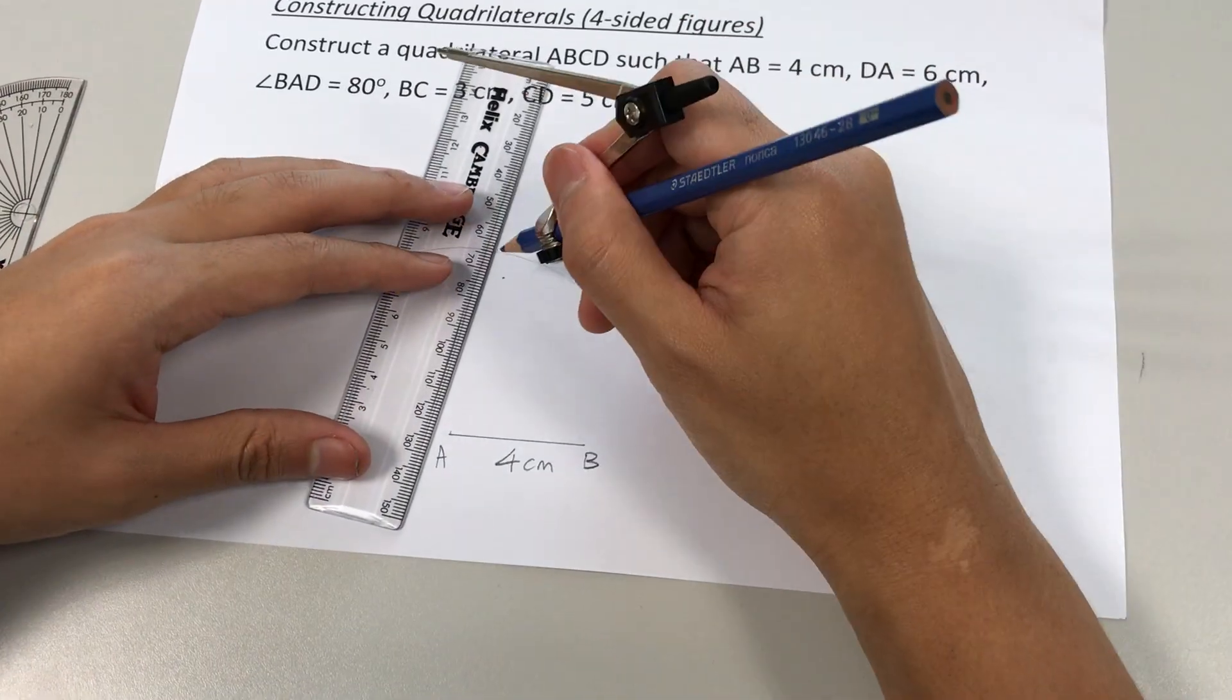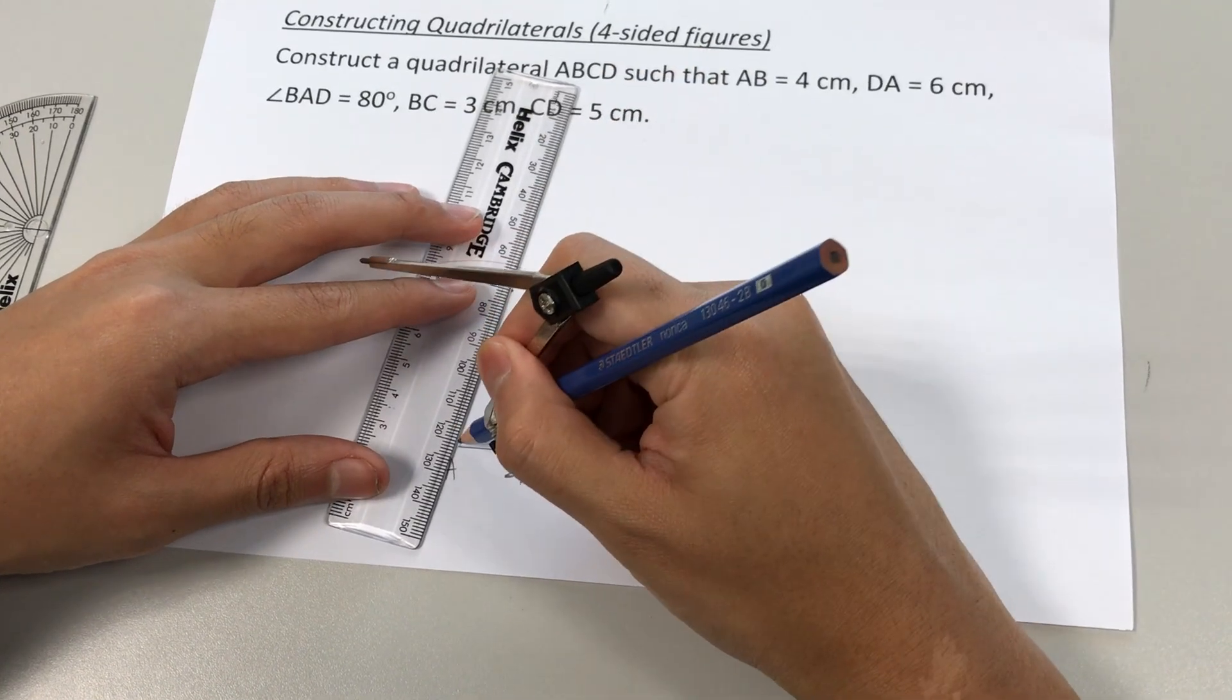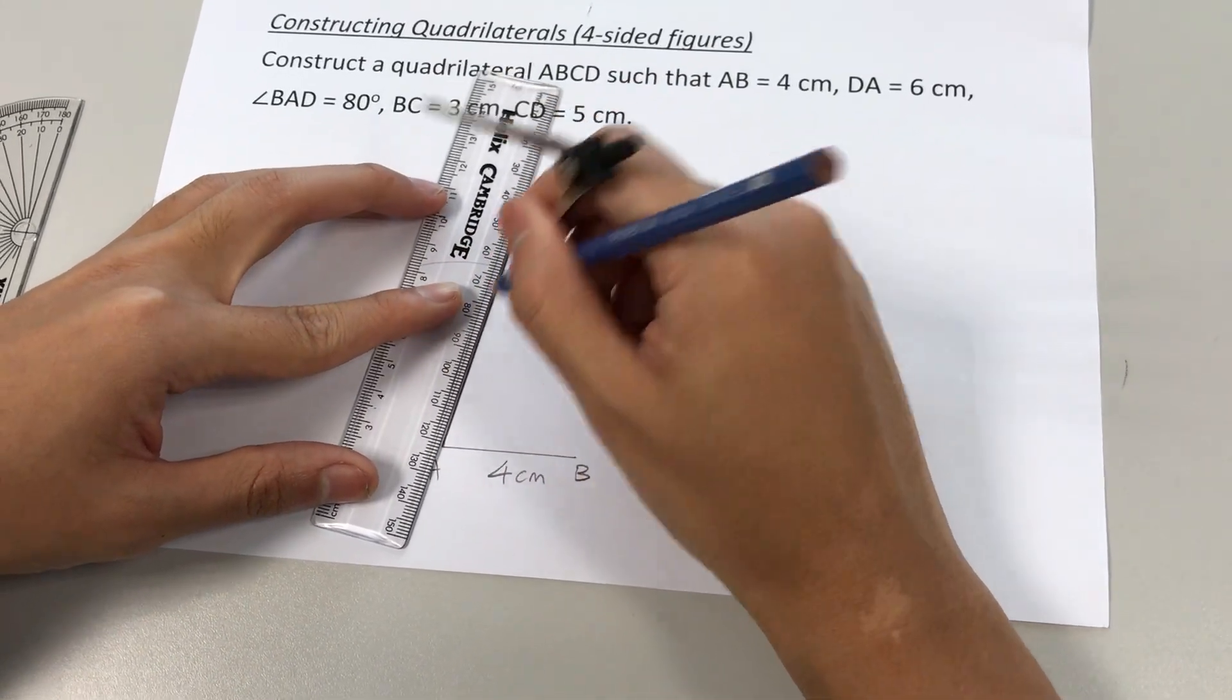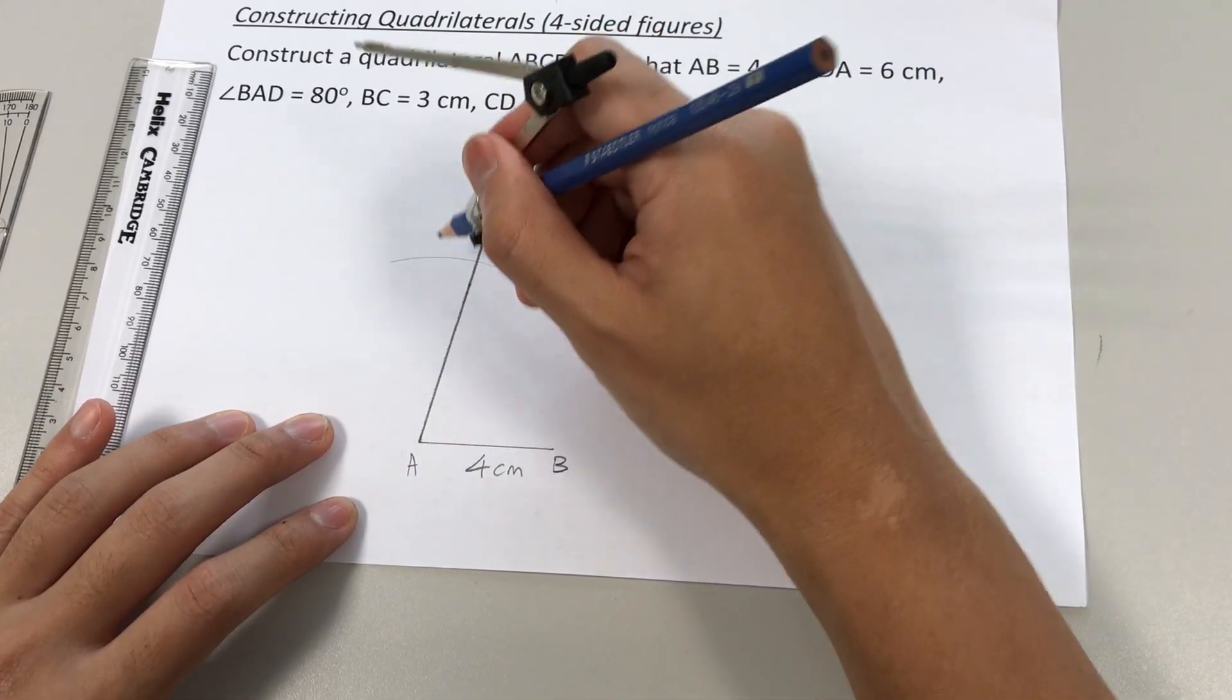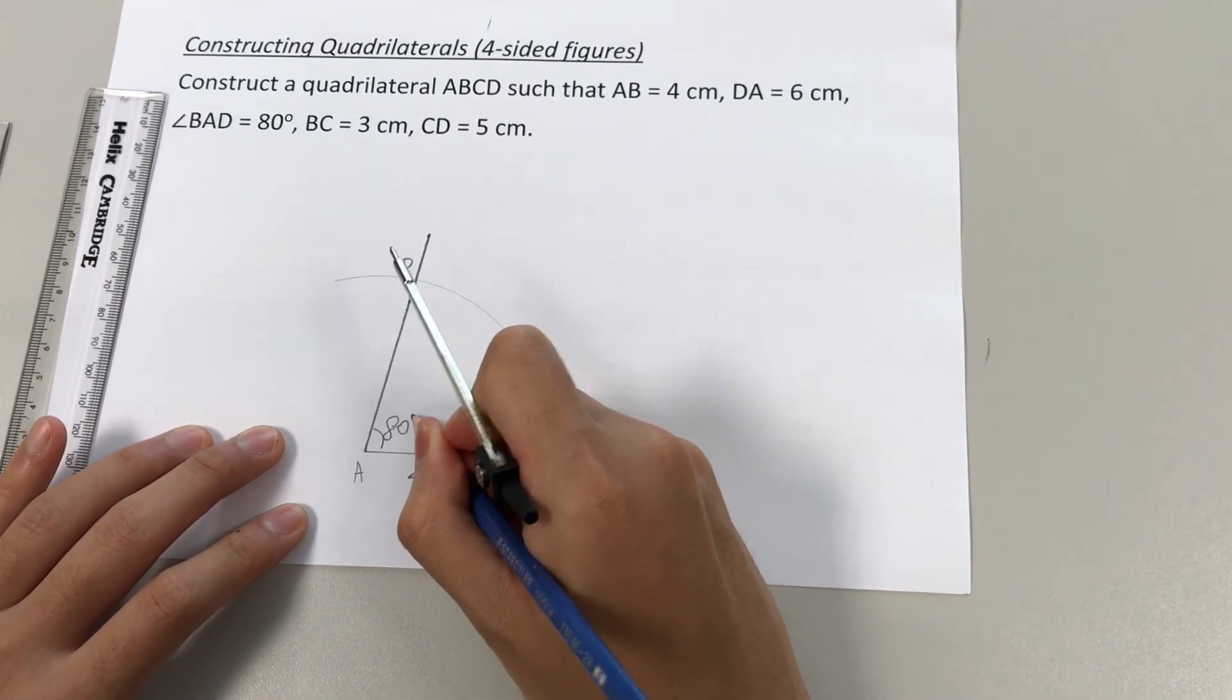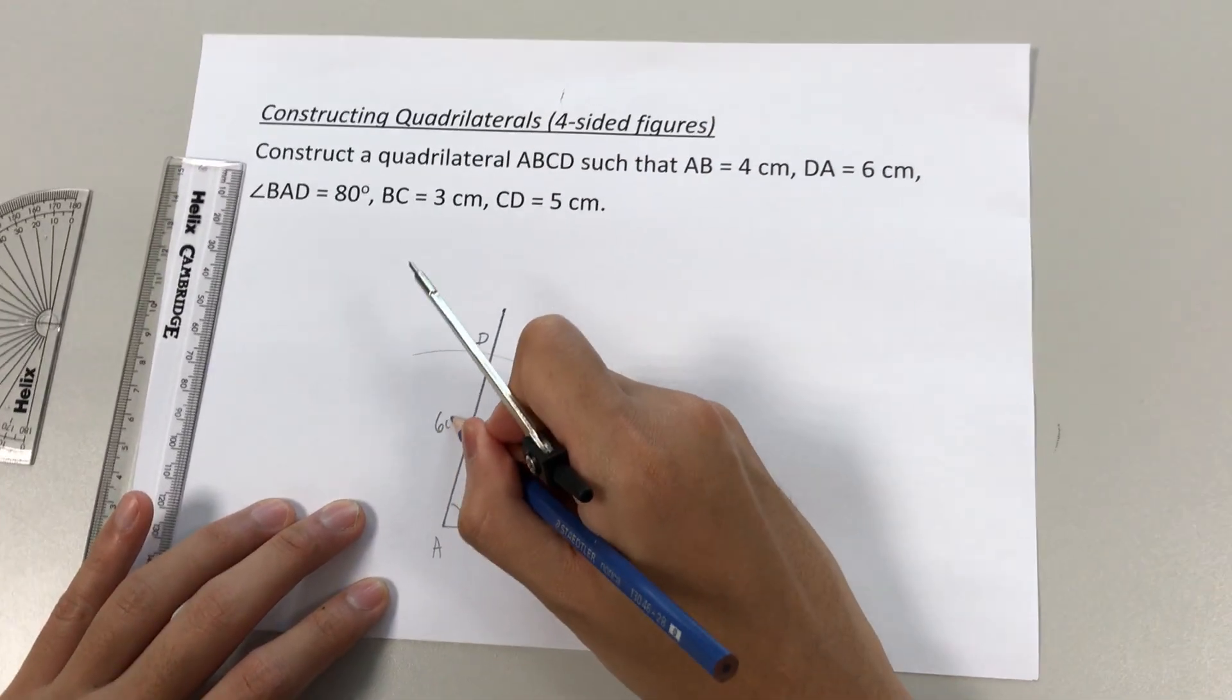Now, change to your ruler. Join the marked point with A. All right. It's okay to draw slightly longer. The point where they intersect, we shall call it D. All right. And to be sure, we'll call this 80 degrees. And DA would be six centimeters.